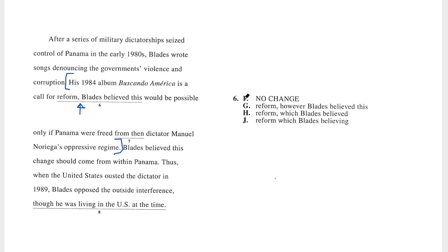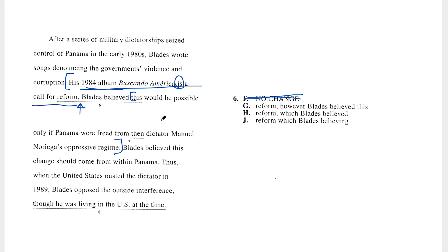That is exactly what F does, and that is why F is wrong. Let's take a look. 'His album is a call for reform' — that is a complete sentence. I could put a period right there. And then we have 'Blades believed this would be possible' — again a complete sentence with subject and verb. No glue in between. That's a run-on.